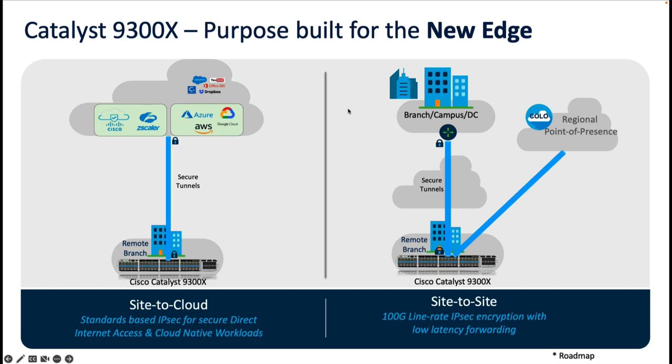With these capabilities, customers can connect their lean branches or segments securely to multi-cloud environments and offload different security features to secure internet gateway providers like Cisco Umbrella, Zscaler, or any other third-party provider that supports the IKEv2 standard. Secure tunnels can also be provisioned from the 9300X to different cloud providers like AWS, GCP, or Microsoft Azure to access their native applications or workloads securely.